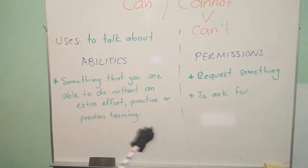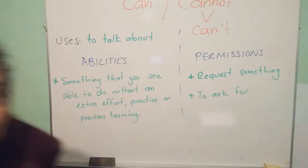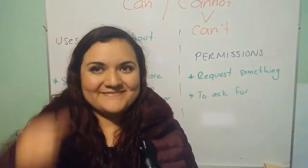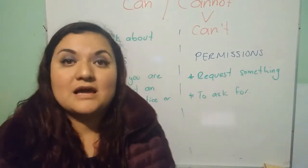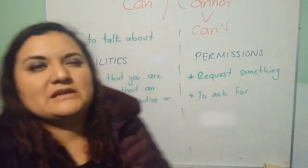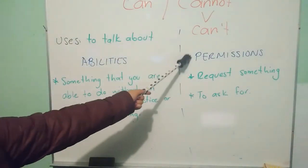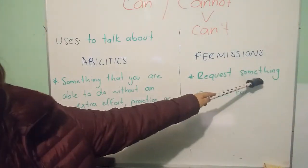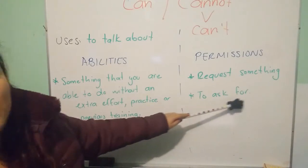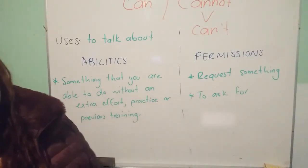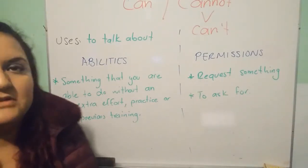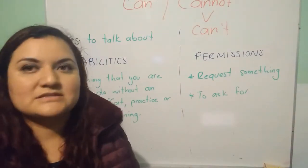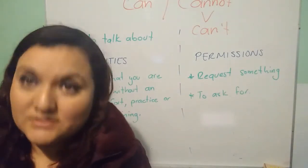Es decir, que te sale natural. For example, I can speak Spanish — puedo hablar español, esa es una habilidad que tengo. Y si hablamos de permiso, es porque tú estás solicitando algo o pidiendo algo, ya sea un favor o que te dejen pasar, que puedas realizar alguna acción.